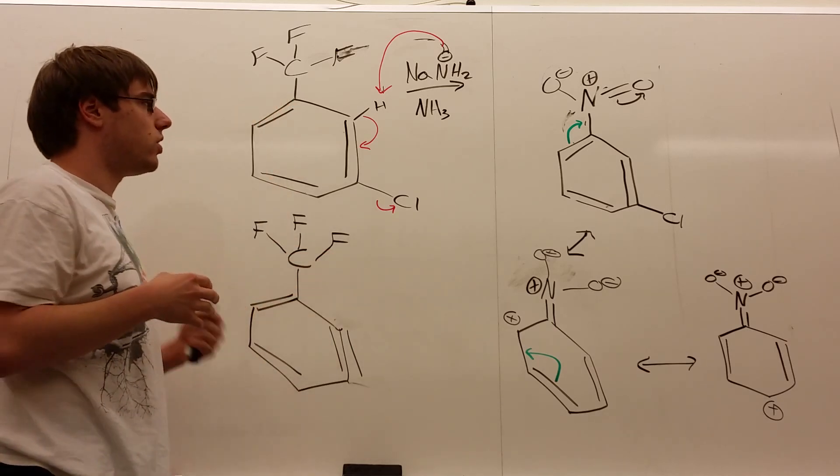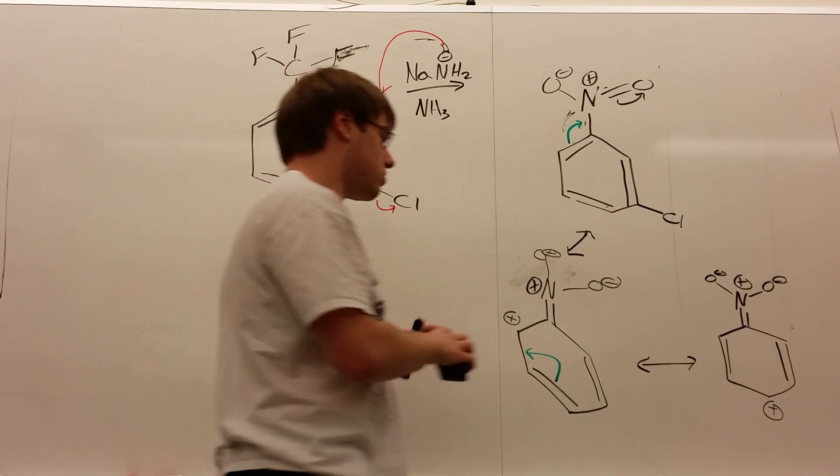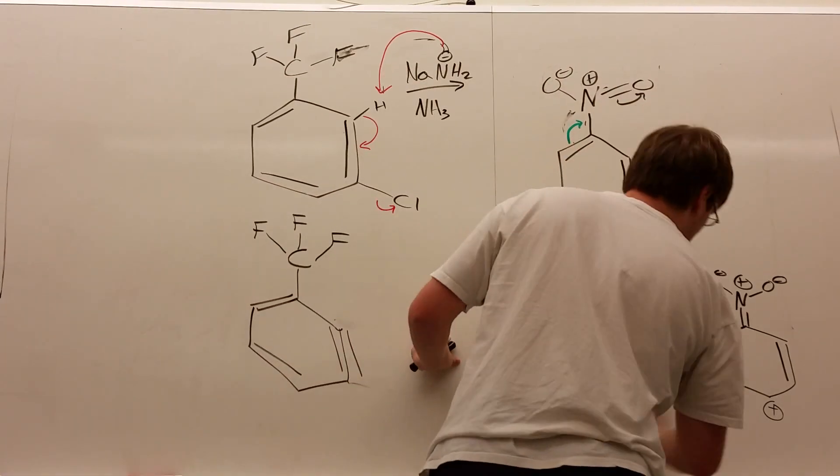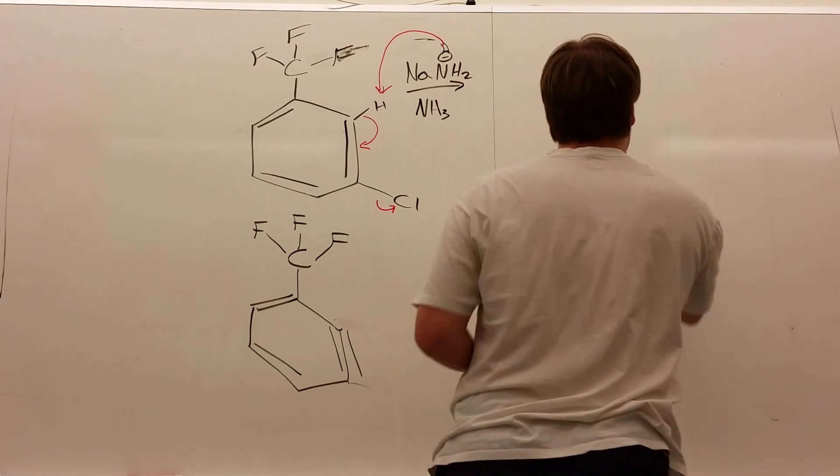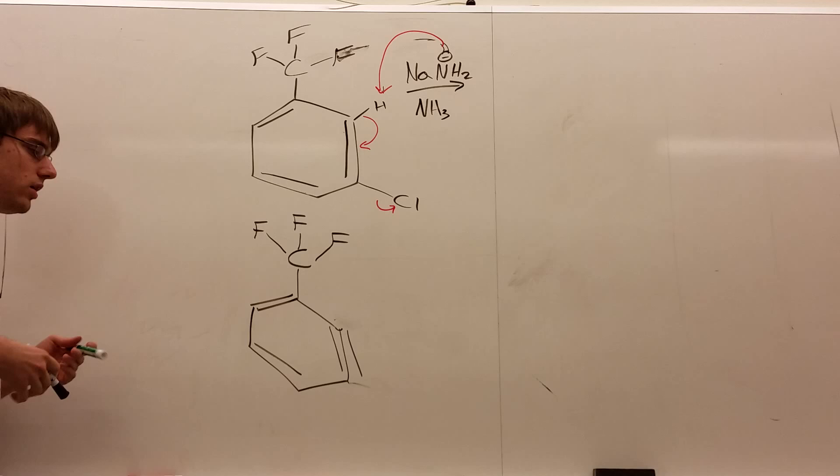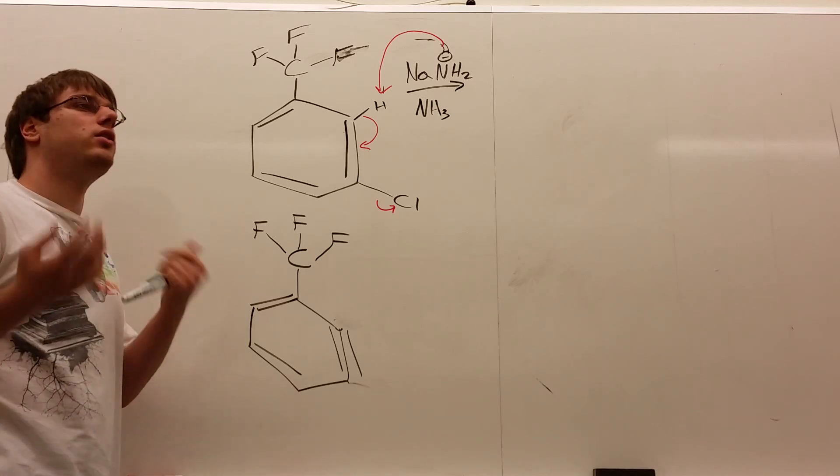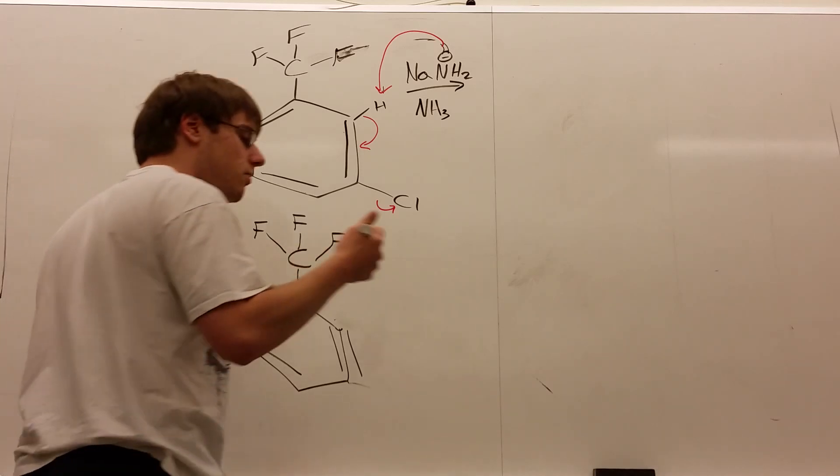So how do we consider where the NH3 is going to go in this case? In the case of CF3, it's still a very strong withdrawing group, so it's going to want the electrons closest to it. It wants the abundance of electrons to be closest to it.